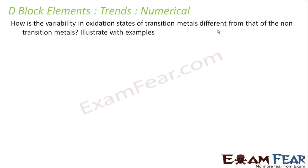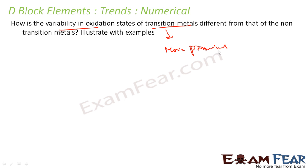How is variability in oxidation states of transition metals different from non-transition metals? Both show variable oxidation states, but it is more prominent in transition metals. We have more examples — for example Fe²⁺ and Fe³⁺ are both very common. Non-transition metals also show variable oxidation states, but they are not as prominent, and typically their oxidation states differ by two, whereas transition metals can differ by one.